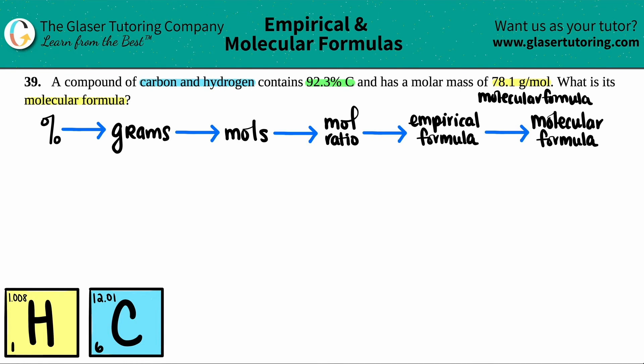So the first thing I'm going to do is list out what I have. Now, the only percent that they told me was that it was 92.3 percent carbon. But they told me that the compound was carbon and hydrogen. So I know that there has to be some percentage of hydrogen in my compound, but what is it? Well, remember a percentage, a total percentage, a whole compound is made out of 100%. So if 92.3% is devoted towards carbon, what's the percentage that's devoted to hydrogen? We would do 100 minus 92.3.